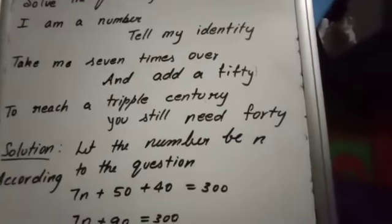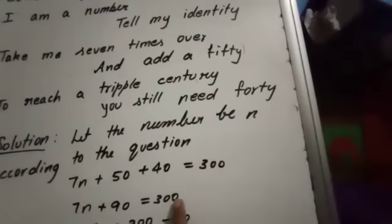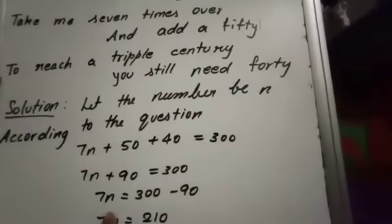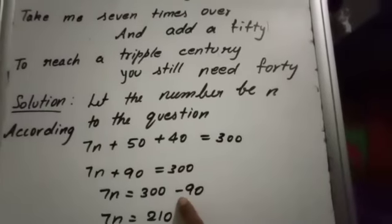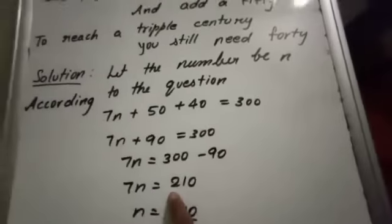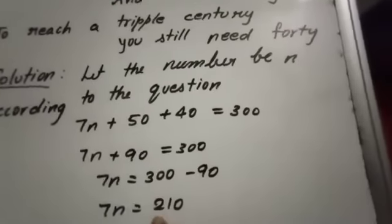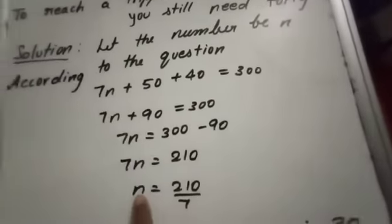7n plus 50 plus 40, that's 90, is equal to 300. This 90, if we shift to the right-hand side, it becomes minus 90. When we subtract, we will get 210: 7n equals 210. Now we have to find out the solution.